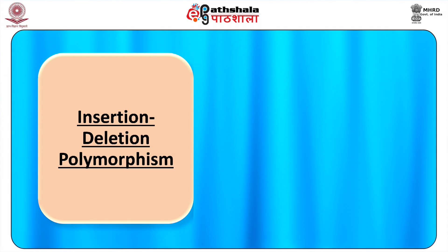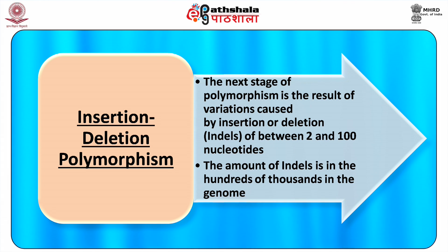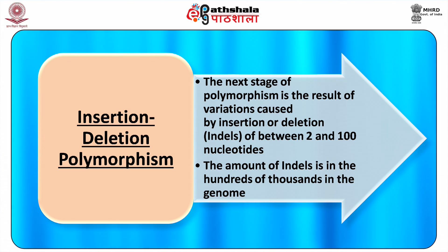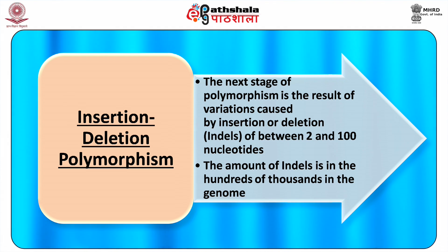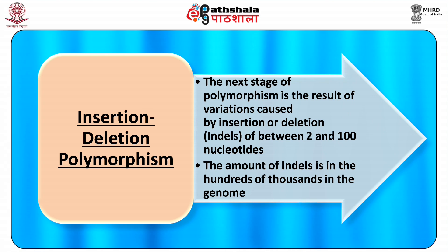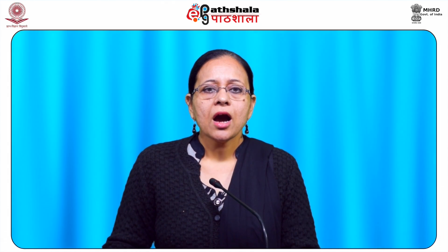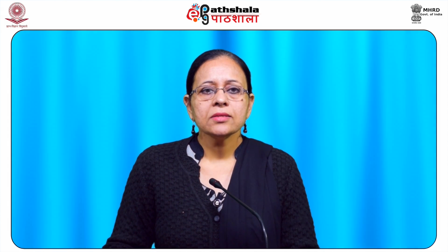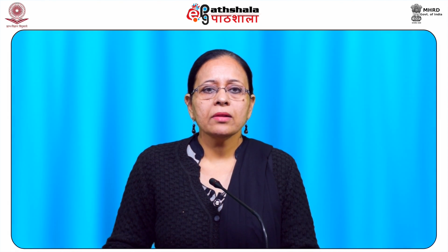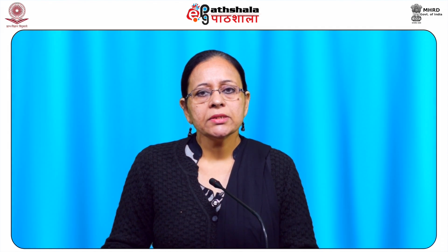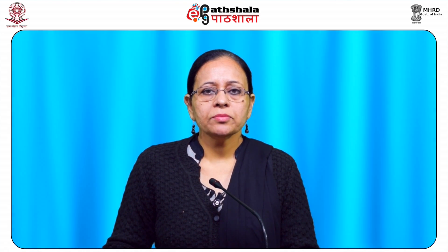Insertion-deletion polymorphism: The next type of polymorphism is the result of variations caused by insertion or deletion segments, also known as indels, of between 2 and 100 nucleotides. The number of indels is in the hundreds of thousands in the genome. Approximately half of all indels are referred to as simple because they have merely two alleles — that is, the existence or non-existence of the inserted or deleted segment. The other half are multi-allelic due to variable number of a section of DNA that is repeated in tandem at a particular location. They are divided into microsatellite and mini-satellite polymorphisms.